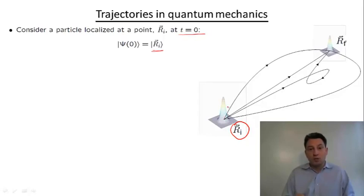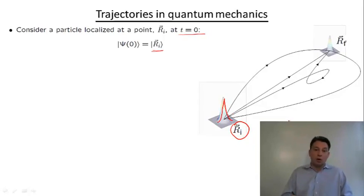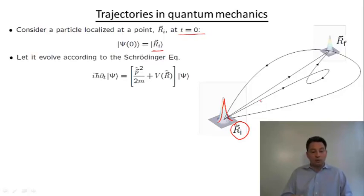In physical terms, this wave function is a very narrow wave packet localized in the vicinity of R sub i — very similar to the wave packet we saw in the last segment of the very first lecture. This initial state is going to evolve under the action of the Schrodinger equation with some kinetic energy and potential energy.